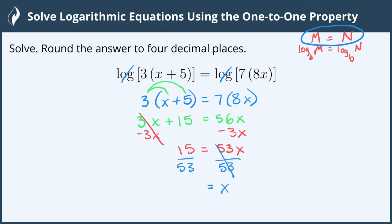Typing this into our calculator, 15 divided by 53 is 0.283019, and we can stop there.